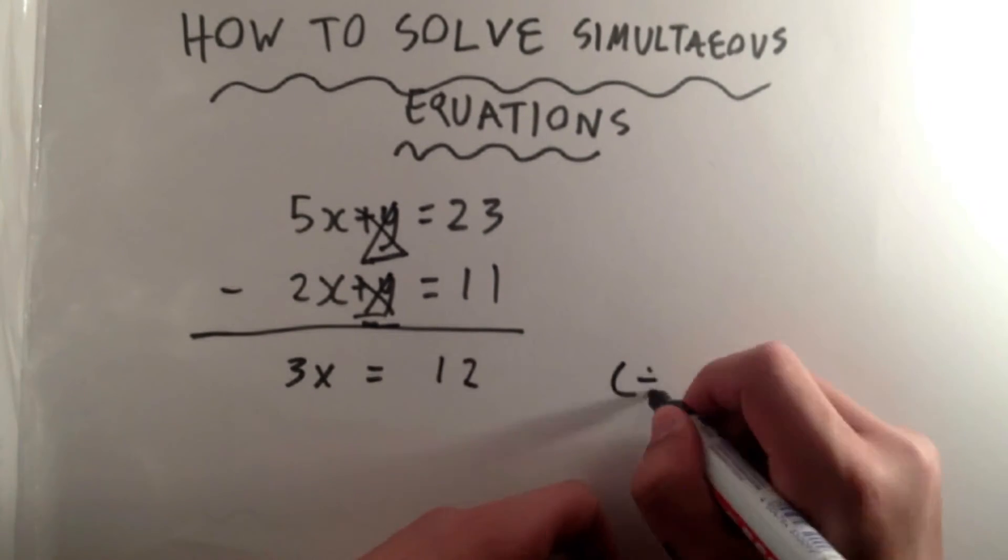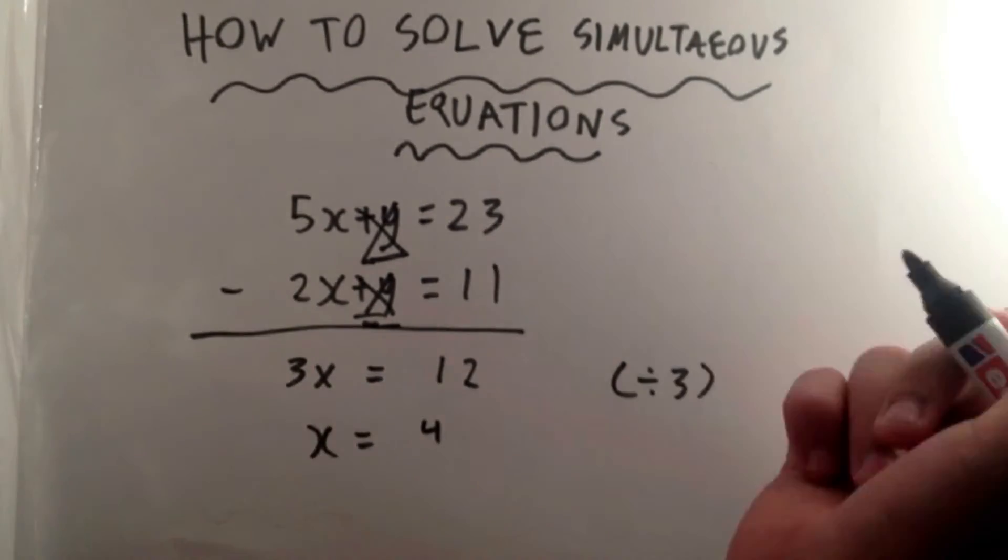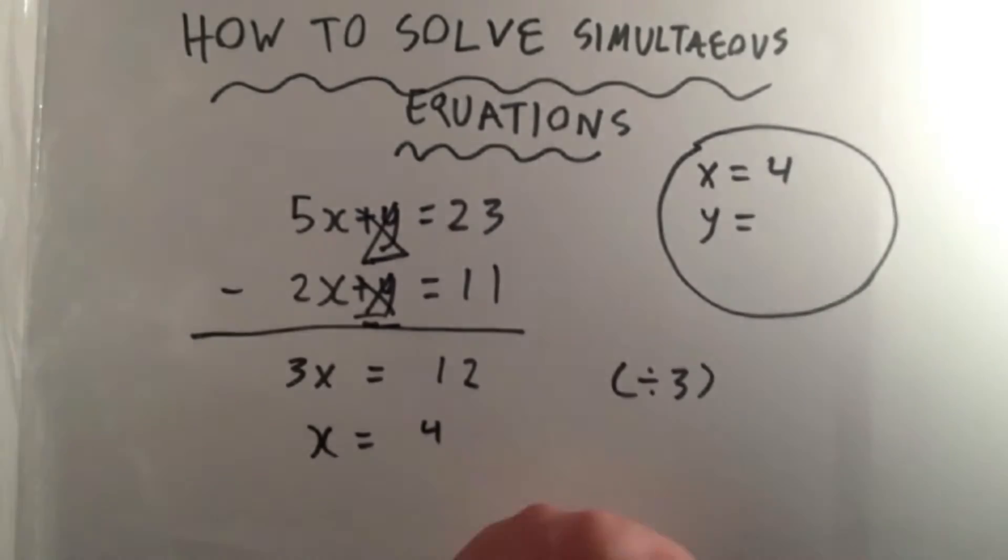So now we're left with 3x equals 12. When we divide by 3, we find out that x equals 4. And there we have it, x equals 4, first answer.